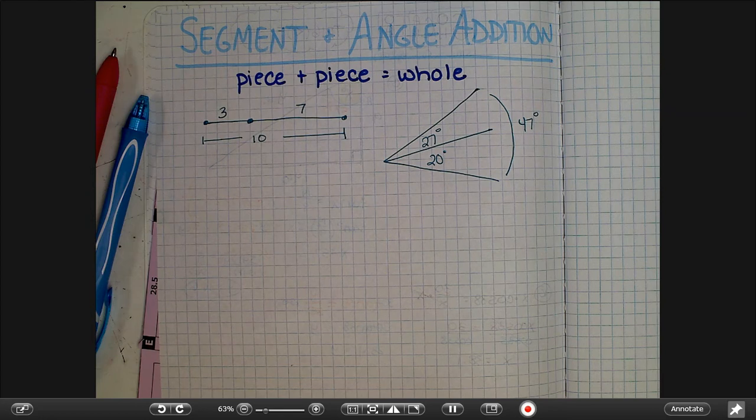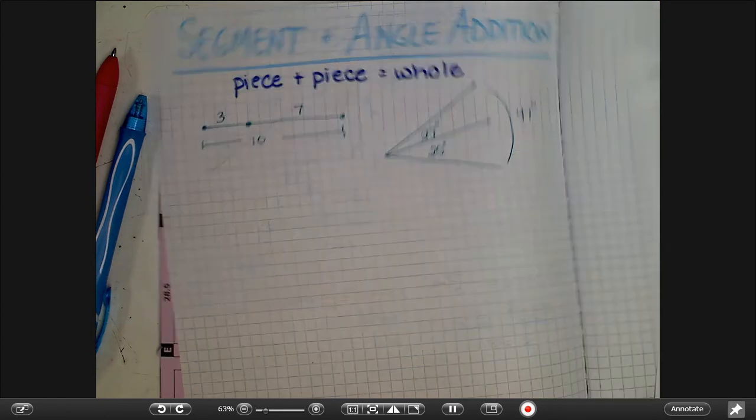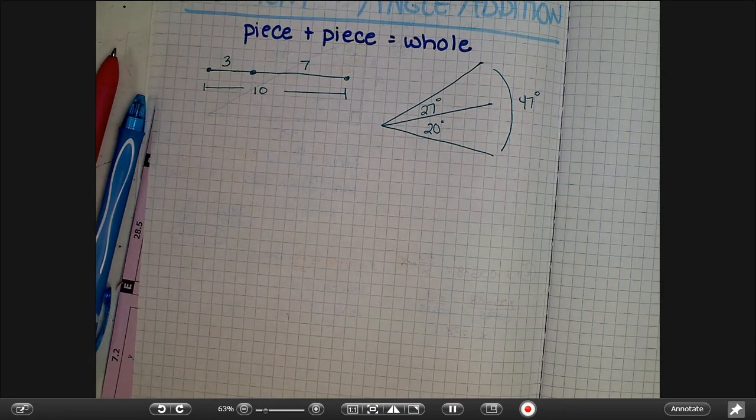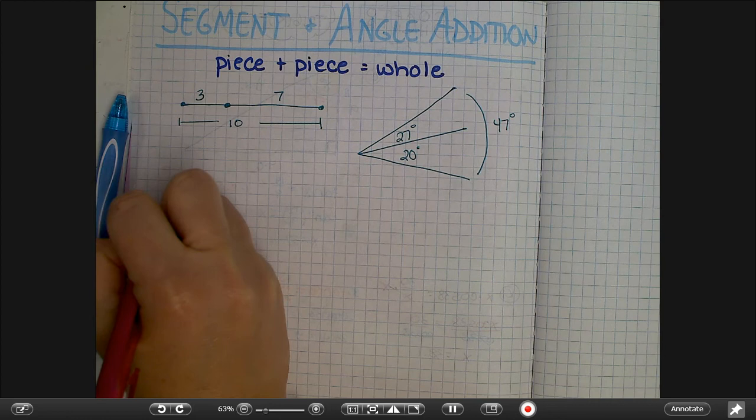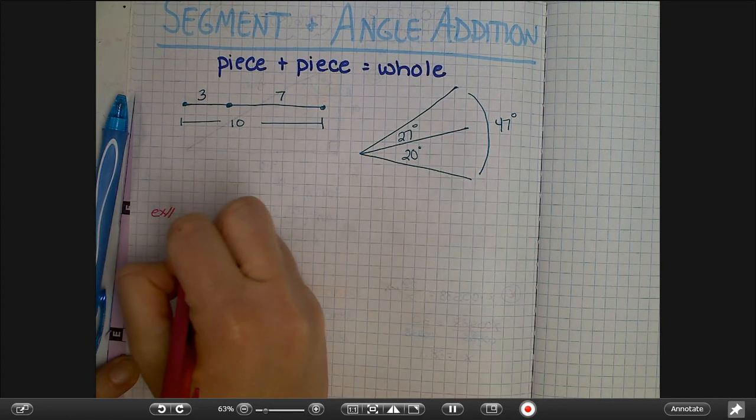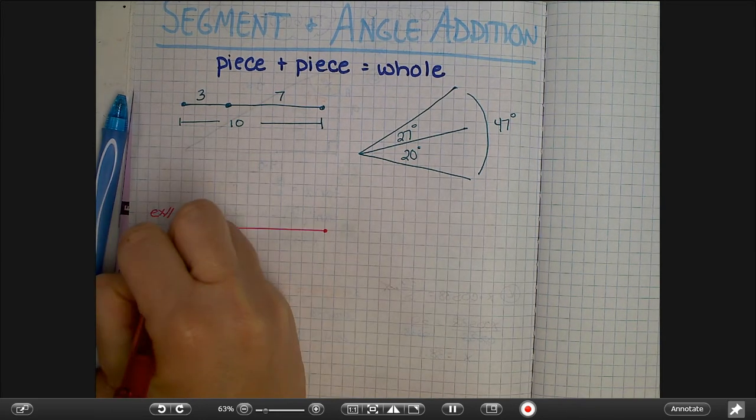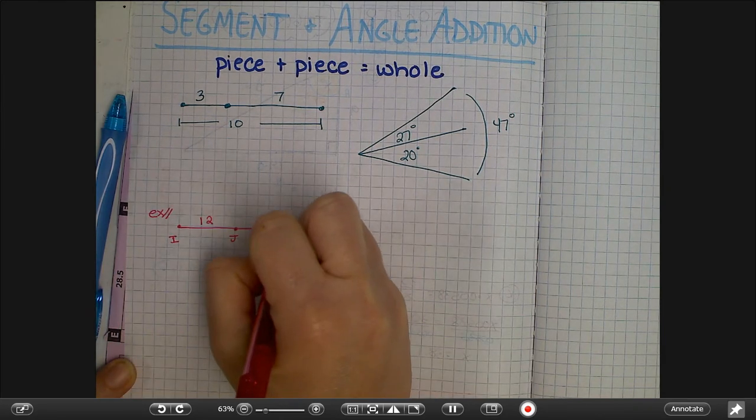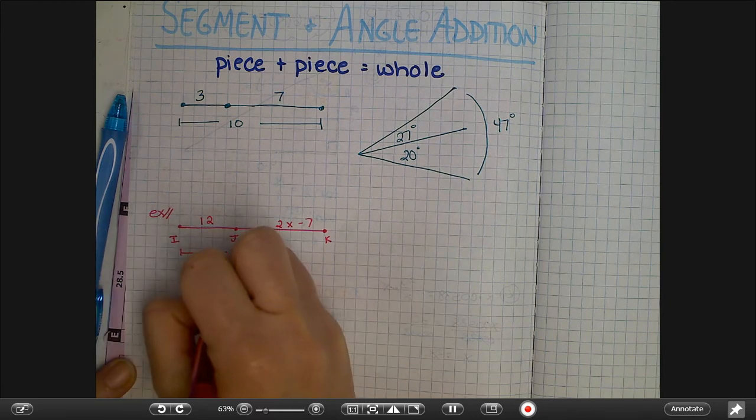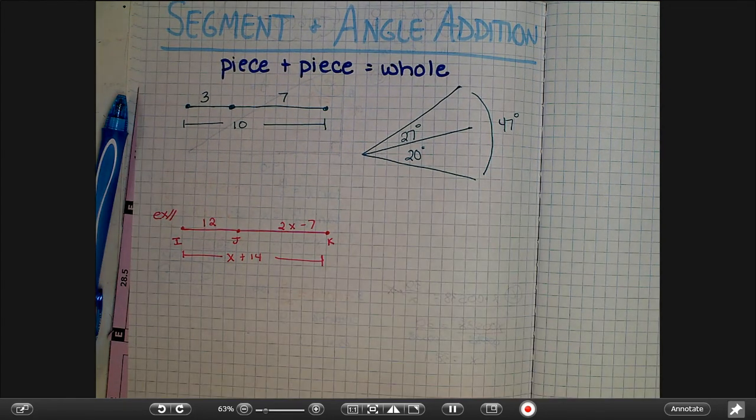But of course when you add algebra into it, it gets a little bit more complicated. So I'm going to do just a few quick examples of what that would look like for your reference and then give you some stuff to practice. Let's say you had this: a segment and its name is IJK, this piece and then the whole thing. Here's a problem, and this one is not like these where you can just in your head say 'oh I know exactly what that is.'